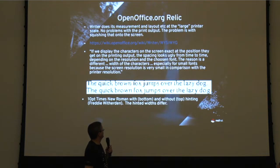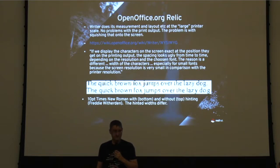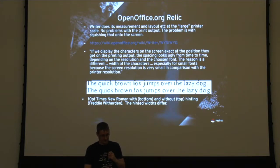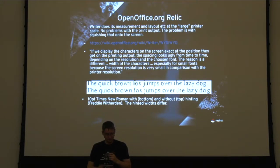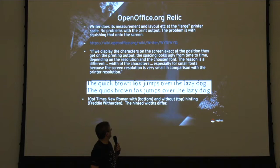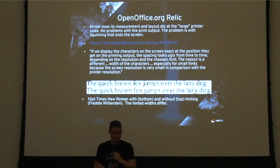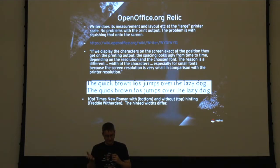There is actually a wiki page on the old openoffice.org website that explains the algorithm and gives some background. What Writer was actually doing is that when it renders to PDF — the final print output — everything is perfectly fine there. Writer does its measurement and layout in the large high DPI printer resolution, so there's no problem with print output. The problem is trying to squish that down onto the screen. The quote from the wiki says: if we display the characters on screen exactly at the positions they get in printing, the spacing looks ugly, the widths are inconsistent — because the screen resolution is very small.